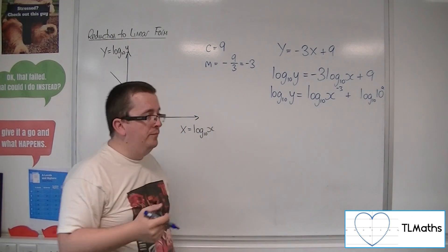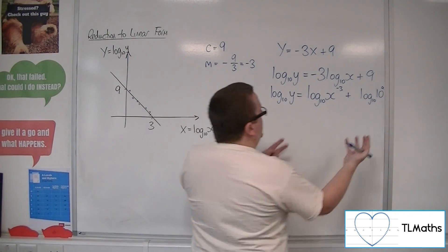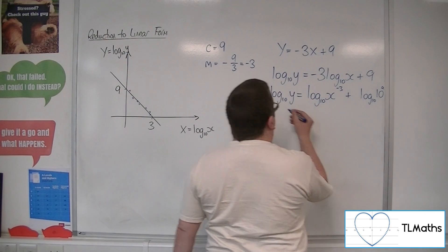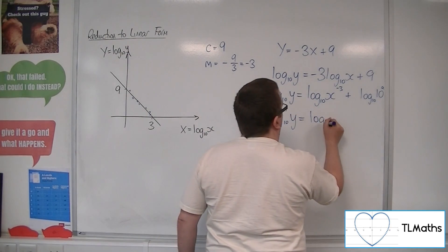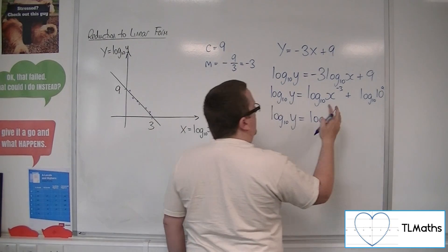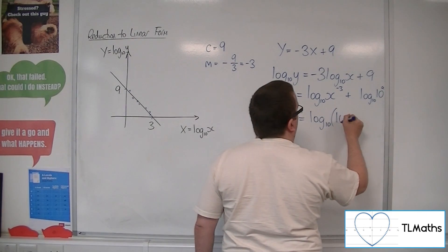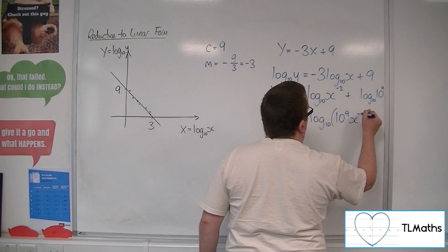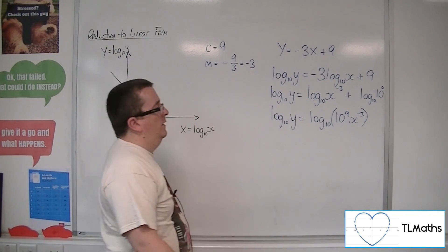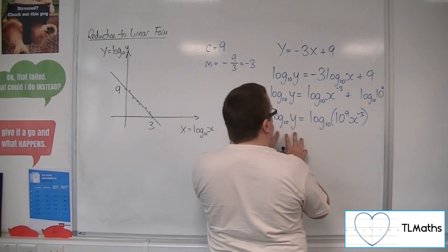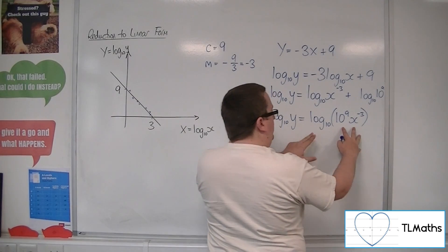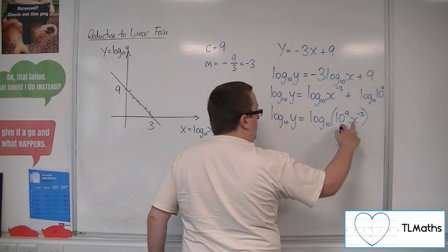You can then combine those two logarithms. So log 10 of 10 to the 9 times X to the minus 3. And now you can get rid of the logs, because if you've got log 10 of Y equals log 10 of this, then the Y must be equal to what's in that bracket.